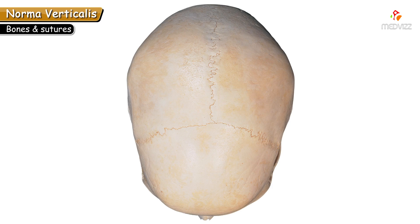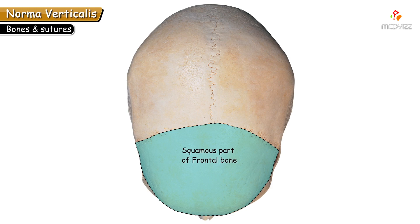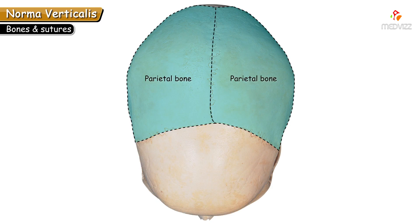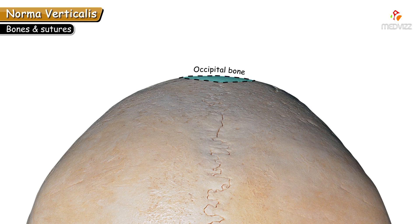The bones forming this view: the first bone is the frontal bone, which is the forehead bone — specifically the squamous part of the frontal bone is visible. Behind it are the parietal bones, quadrilateral-shaped bones present on each side of the midline. The posteriormost bone is the occipital bone.